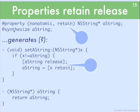So, when you synthesize the getter and setter for this property, this is approximately the code you get. You get a setter, set AString, which takes an NSString, and you get an accessor, AString. Now, the accessor is very straightforward, it just returns a reference to the string.